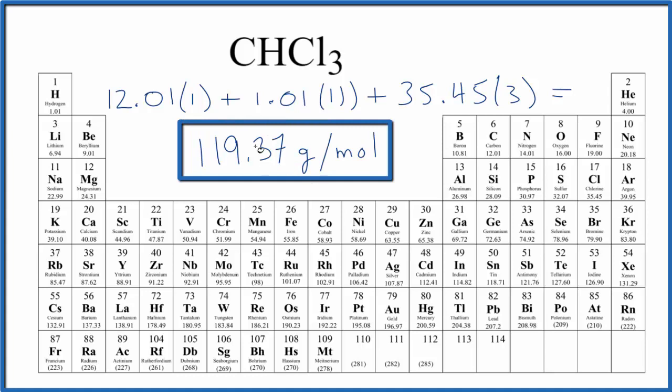And what that means is if I have 119.37 grams, that's one mole of chloroform, CHCl3. If you're given one mole of chloroform, you know that its mass is going to be 119.37 grams because that's the molar mass of chloroform.